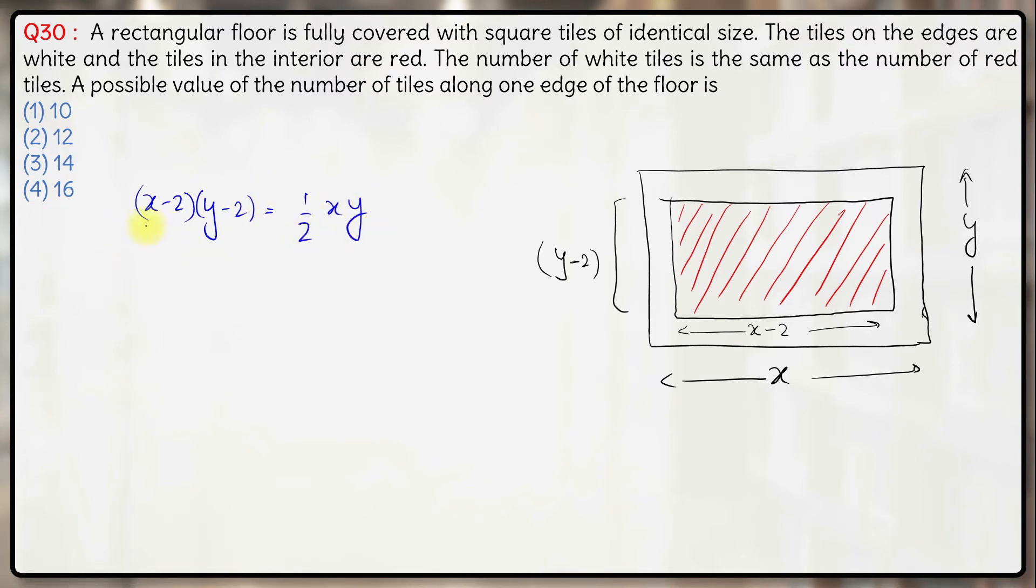So once you expand this, you'll have 2xy, this 2 also gets multiplied, minus 4x minus 4y plus 8 is equal to xy here.